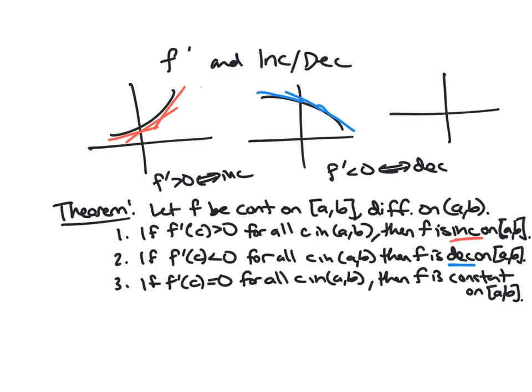And if it is zero, so that's a picture I did not draw up here, so if we just have derivative zero everywhere, horizontal tangent line, then f is a constant function. And this is something we've also kind of talked about before.